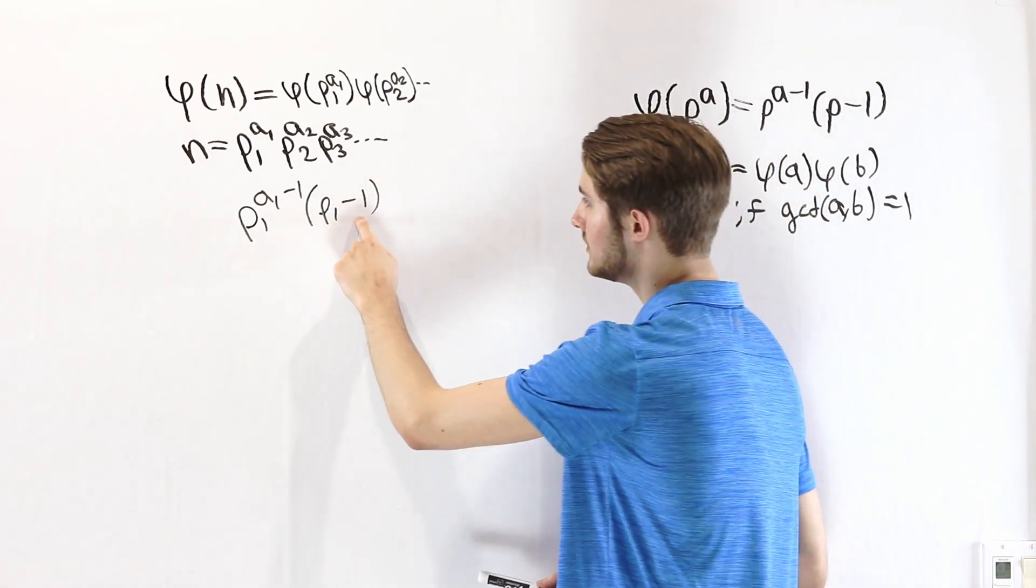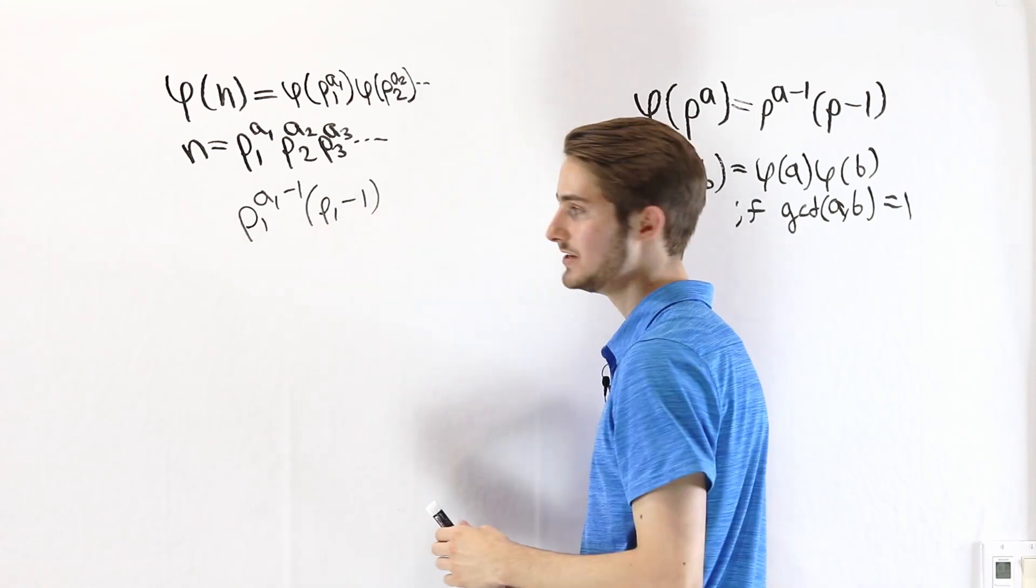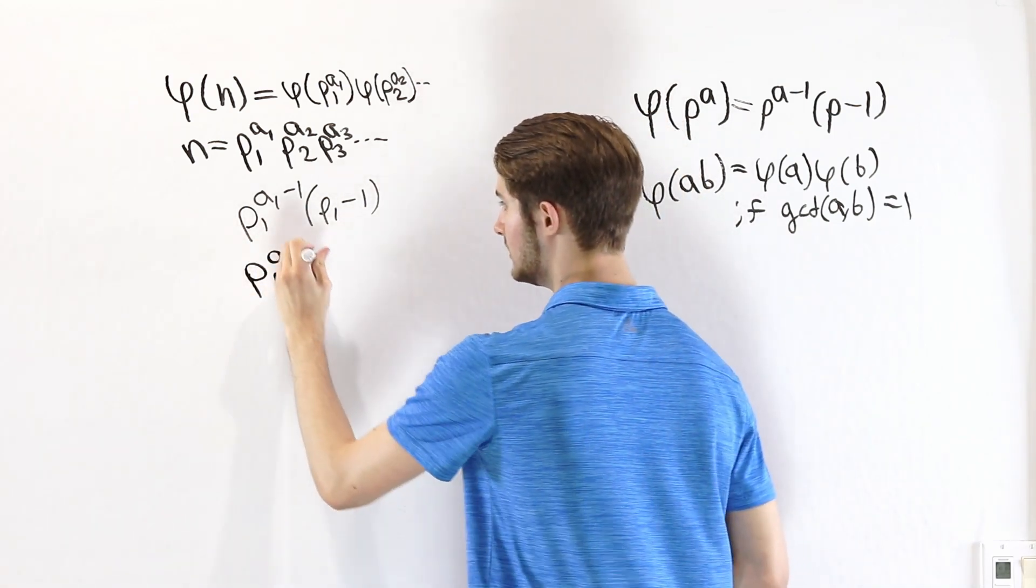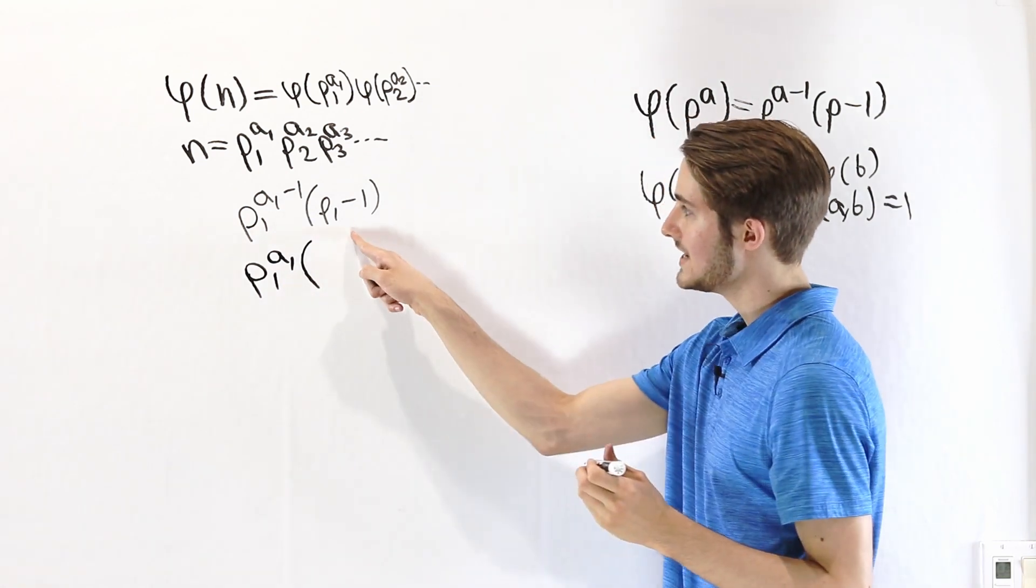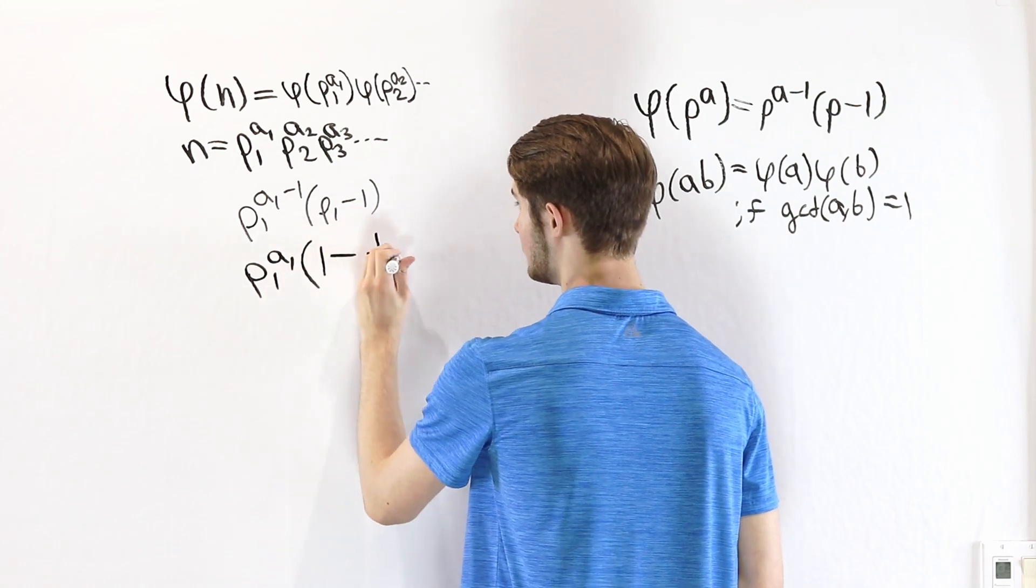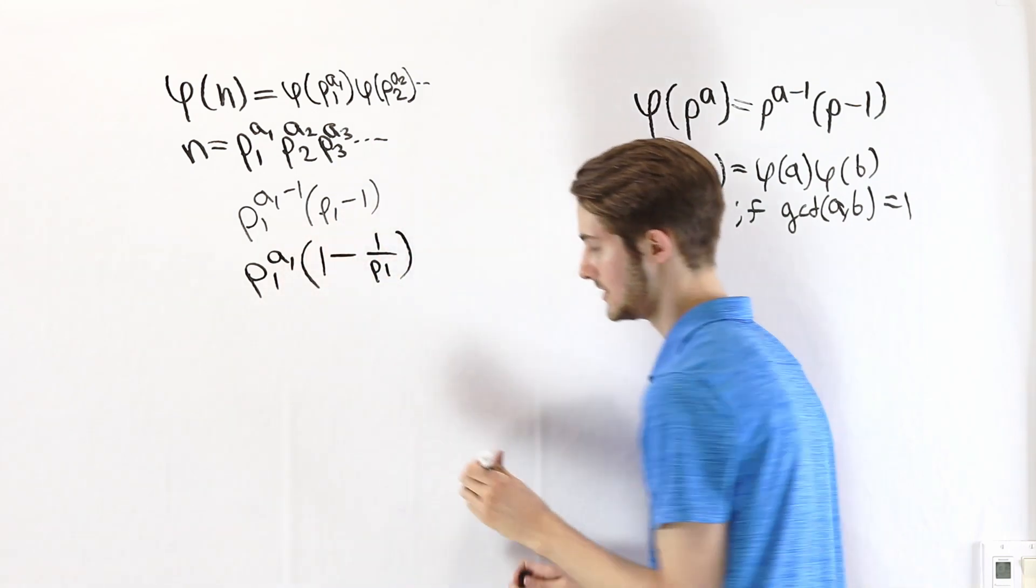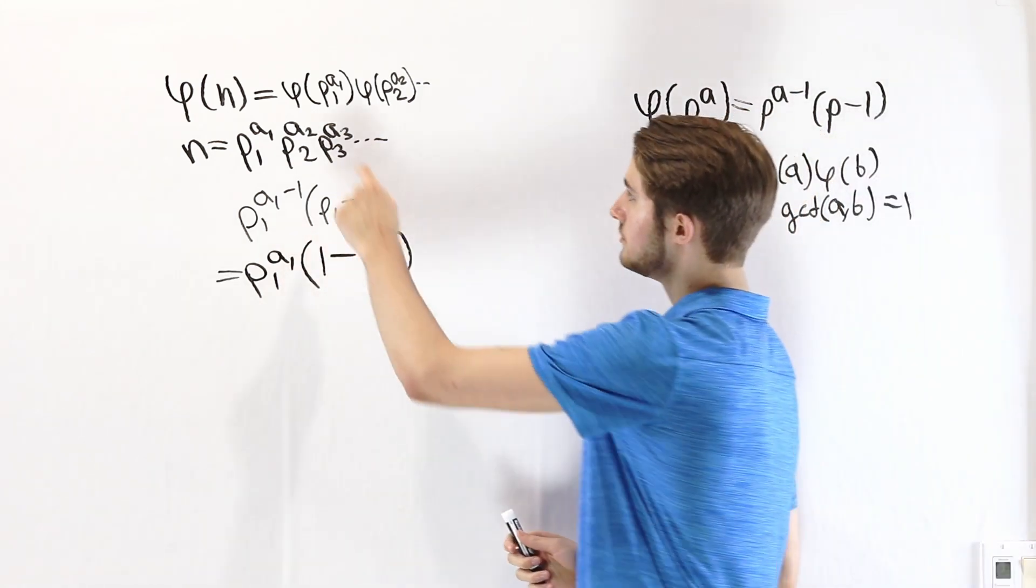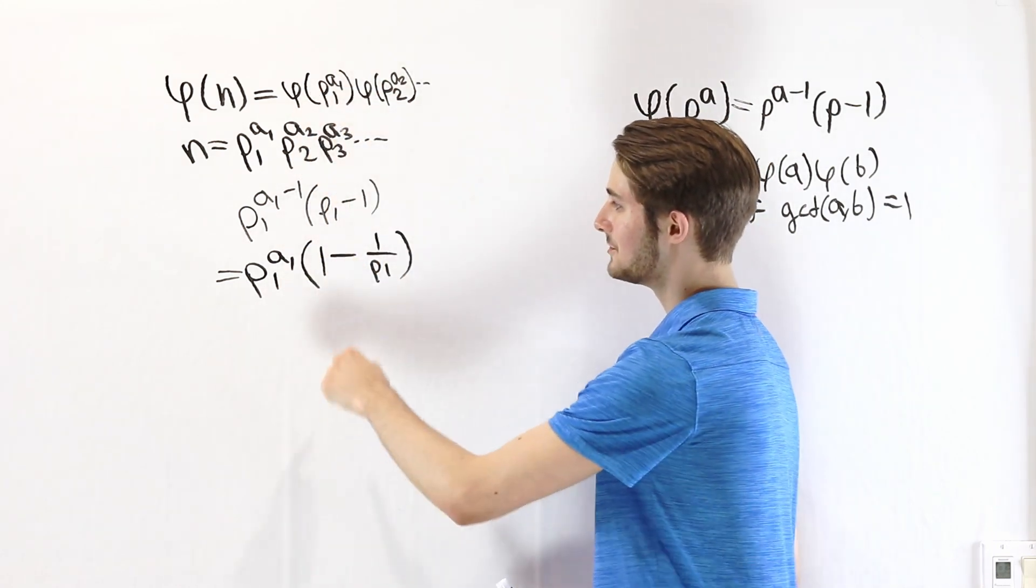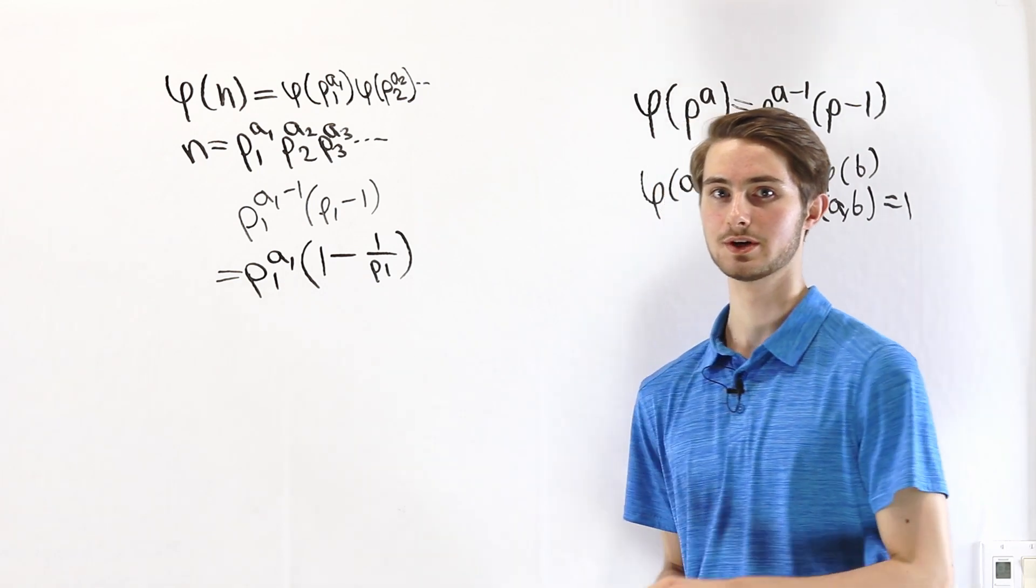If we pull out another factor of p1 from this inside expression, then on the outside we'll have p1 to the a1, and then times, if we take out one factor of p1, p1 over p1 is going to be 1, and then we have minus 1 over p1. So phi of p1 to the a1 is p1 to the a1 times 1 minus 1 over p1.